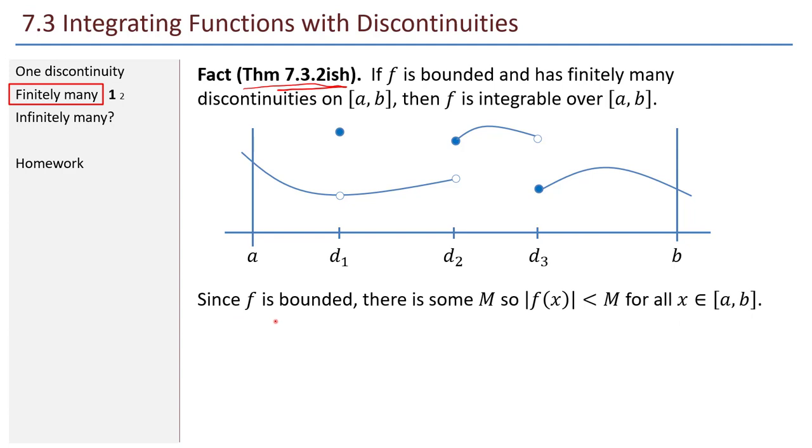Since f is bounded, there's some capital M so the absolute value f(x) is less than M for all x in my interval. We're going to use that capital M at some point. There are finitely many discontinuities. Let's call that t. Suppose there are t discontinuities and we'll call those x values d_1, d_2, d_3, all the way up to d_t. Just to make things a little bit easier for us, let's assume that these points are interior points, so d_1 is not a and d_t is not actually b.